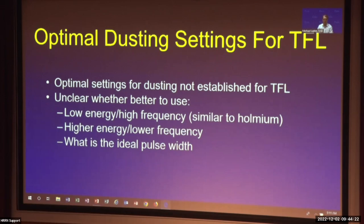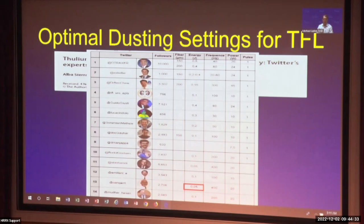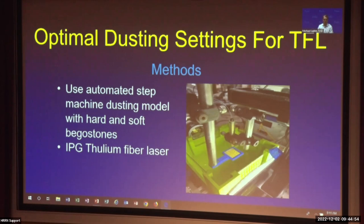A survey of Twitter expert recommendations for thulium settings ranged anywhere from 0.05 to 0.5 joules, 30 to 400 hertz, and 7.5 to 45 watts — demonstrating the wide distribution of opinions. We wanted a benchtop model to find the ideal settings for thulium at safe total power, whether 10 or 20 watts. We used an automated step-mover machine in a dusting model with hard and soft begostone using an IPG thulium fiber laser. We sieved the effluent after lasering — none of the settings created anything approaching a fragment, so fragment size was not a concern.